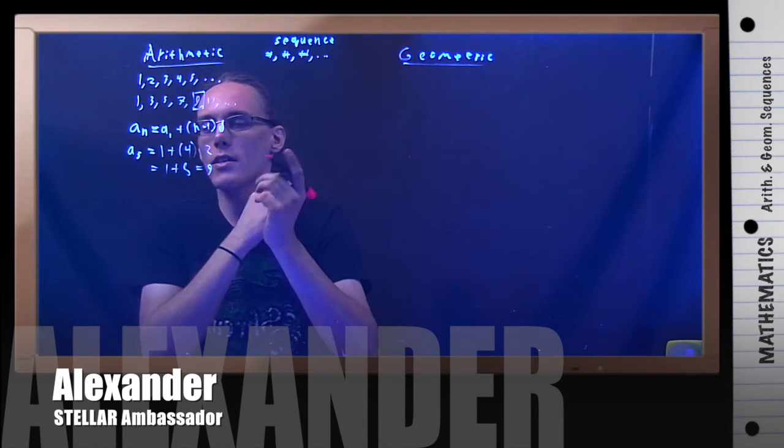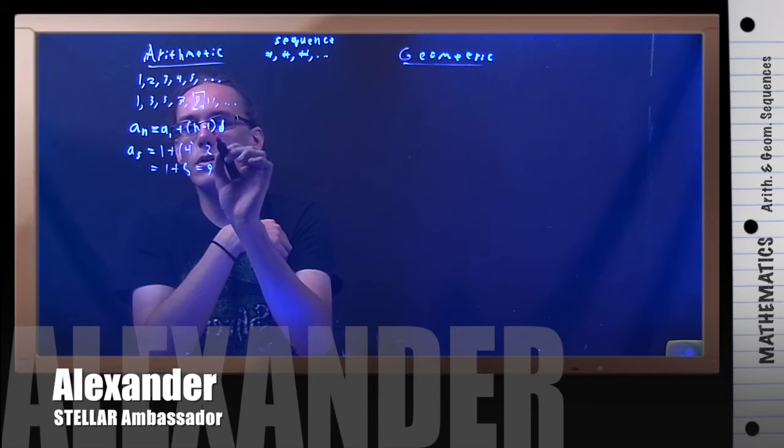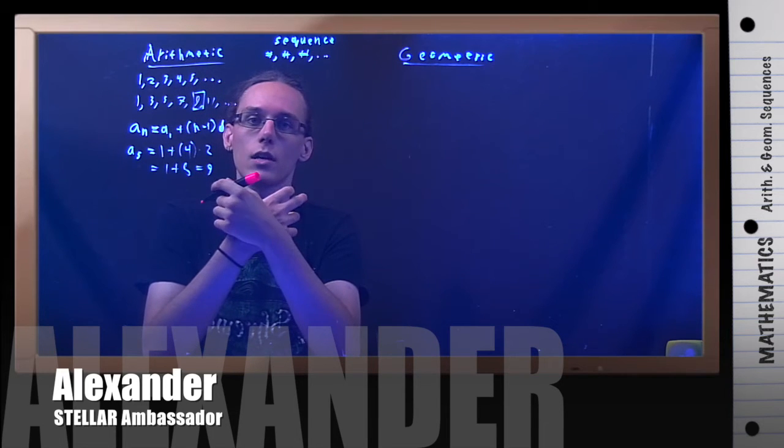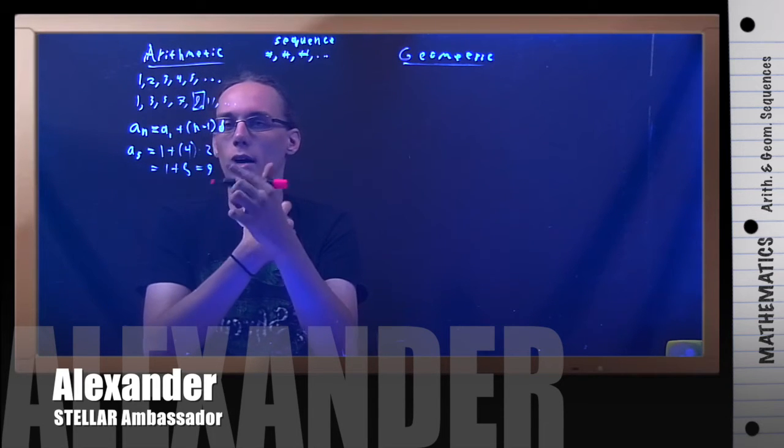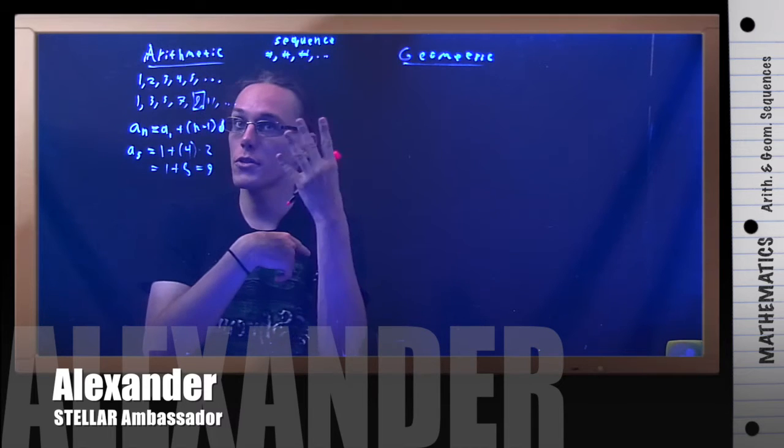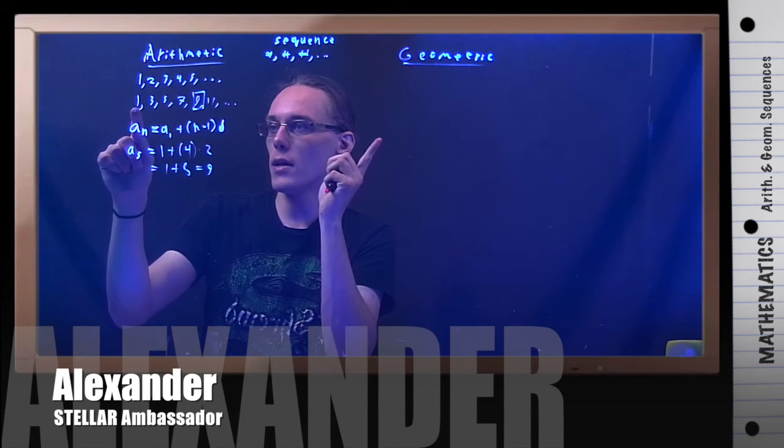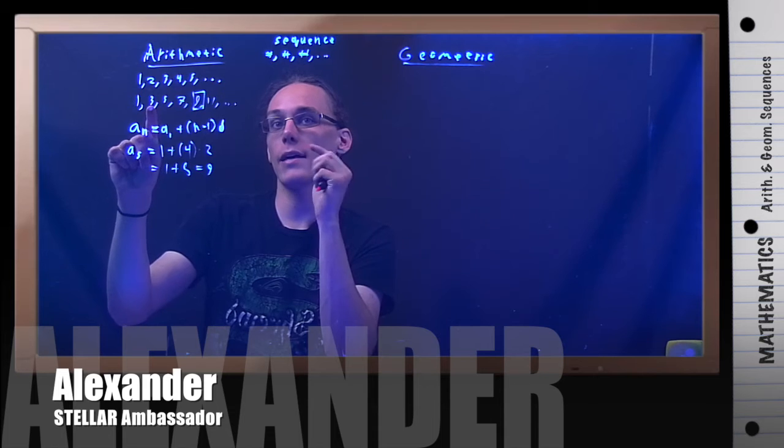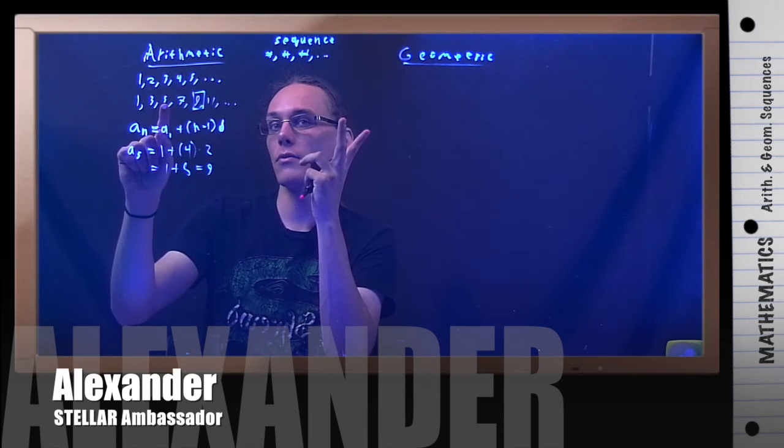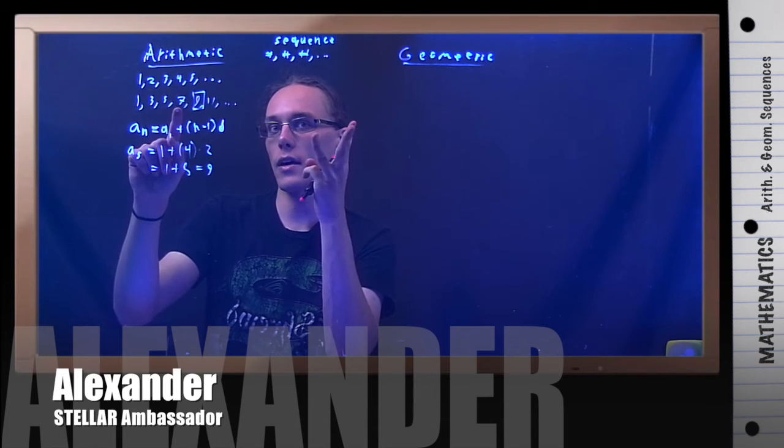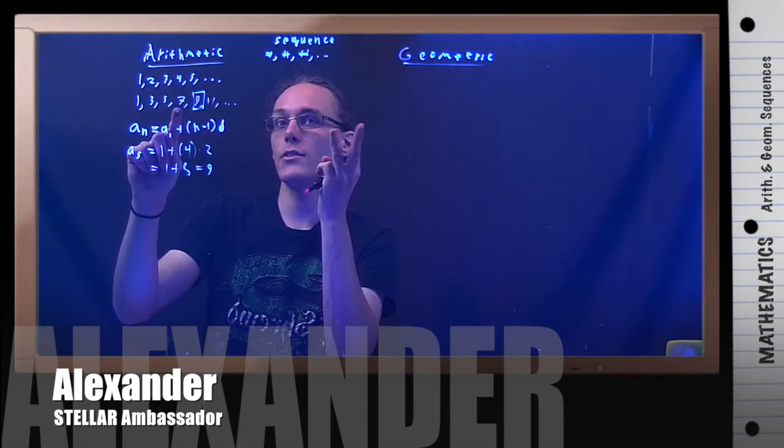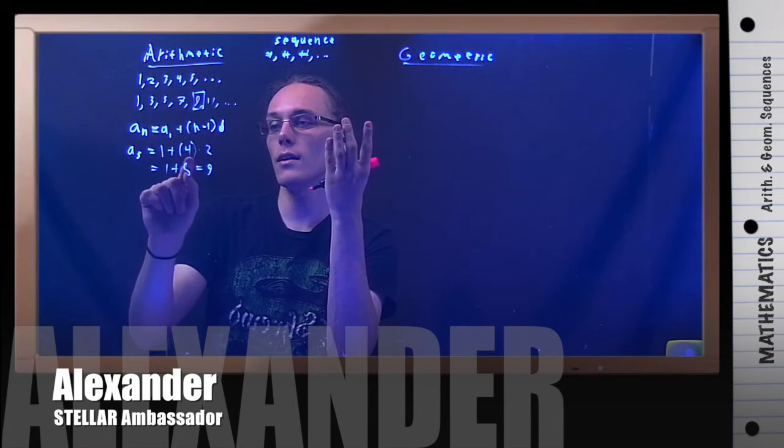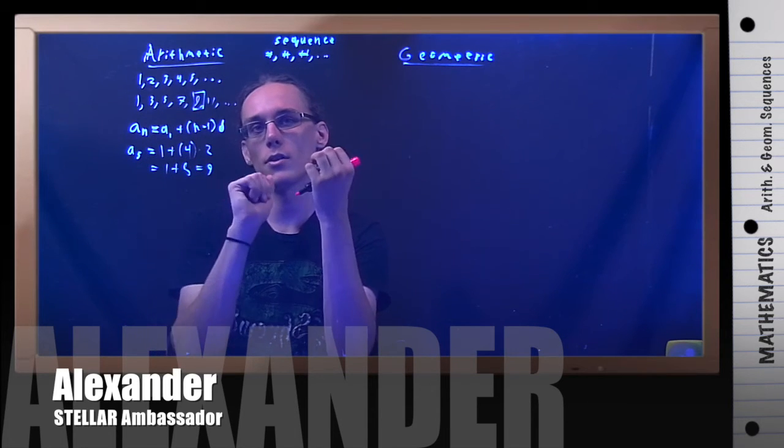Now, the thing here is that if you think about it, this shouldn't be too hard to memorize, because you can just think about what makes sense. What's going on is I added two four times. So, let's look. Add two once, I get three. Add two twice, I get five. Add two three times, I get seven. Add two four times, I get nine. Ta-da! Two times four plus one gives me nine.